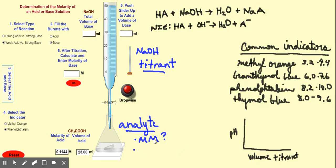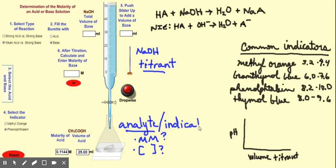Another thing you can figure out from your analyte is its concentration, and this is mainly what we deal with — figuring out concentration — which is what we're doing in our lab as well. Our analyte has some missing piece of information, and we proceed with the titration to find it. There's also something that goes in your flask called your indicator, which is a weak acid that changes color to let you know you've finished the titration.